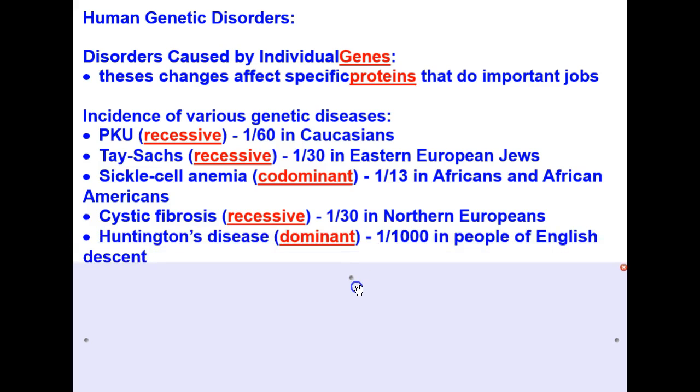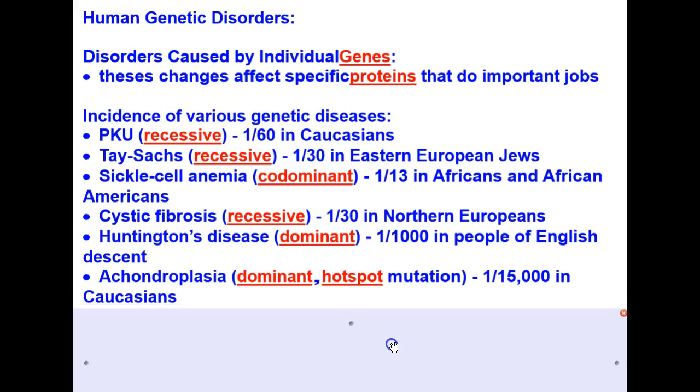Huntington's disease is a dominant genetic disorder. 1 in 1,000 in people of English descent ends up with this. Next we have achondroplasia, also a dominant genetic disease, and it works on a hotspot mutation. 1 in 15,000 in Caucasians.